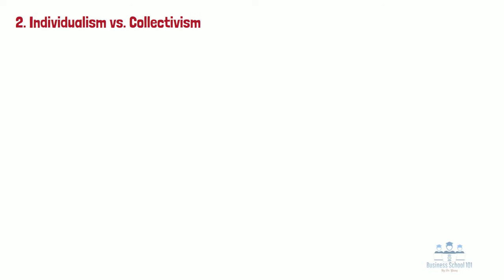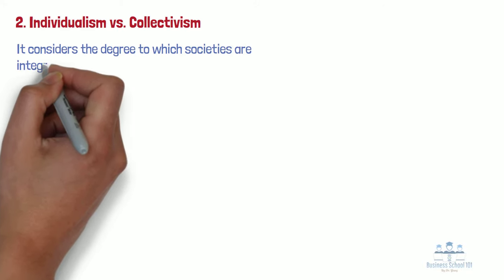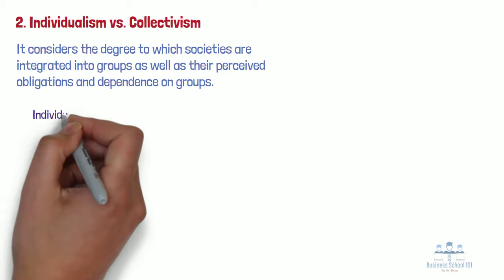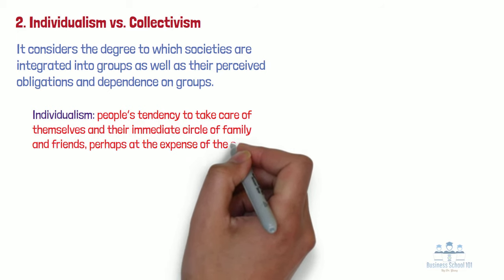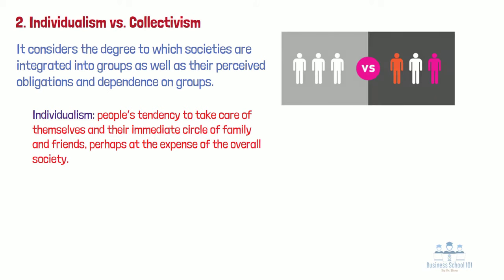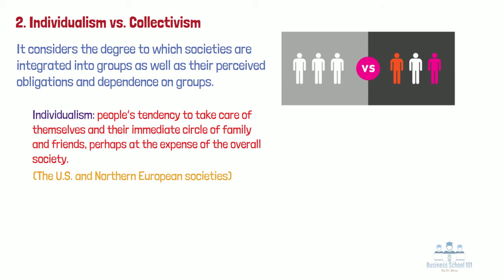Number 2: Individualism vs. Collectivism. The individualism vs. collectivism dimension considers the degree to which societies are integrated into groups, as well as their perceived obligations and dependence on groups. It can also refer to people's tendencies to take care of themselves and their immediate circle of family or friends, perhaps at the expense of the overall society. In individualistic cultures, what counts most is self-realization. Initiating alone, working alone, and achieving alone are what win applause. Competition is a fuel for success. The United States and Northern Europe are often labeled as individualistic, as are Australia and the United Kingdom.